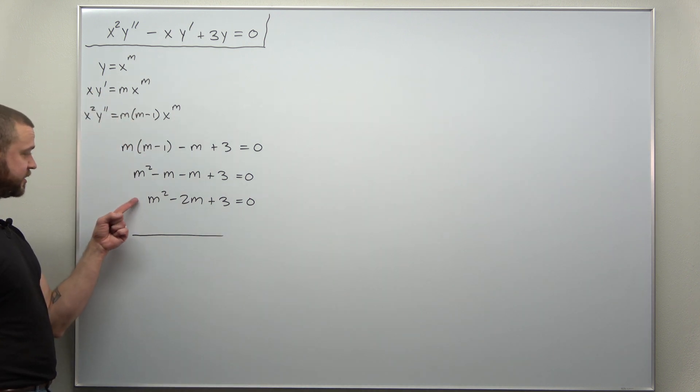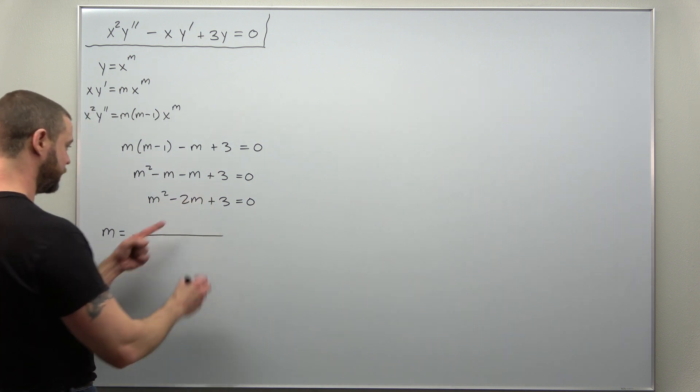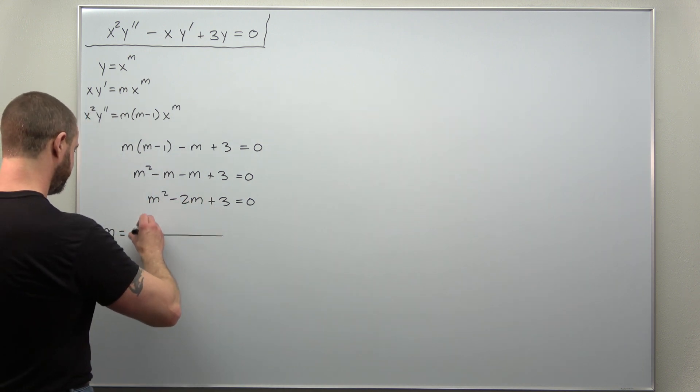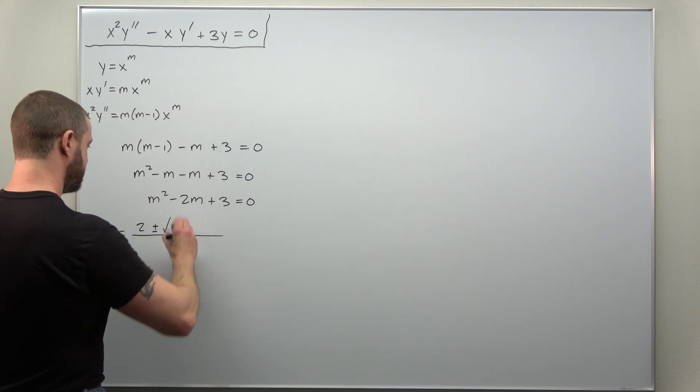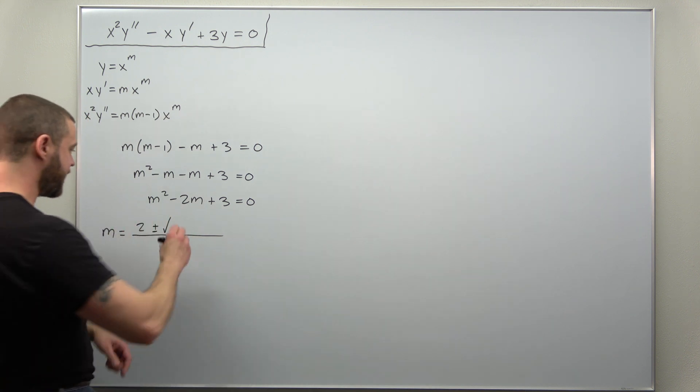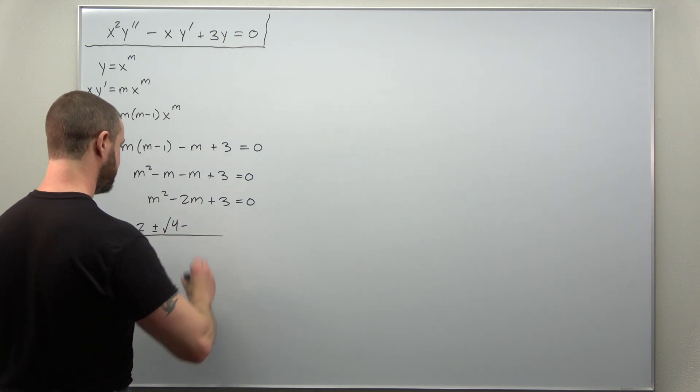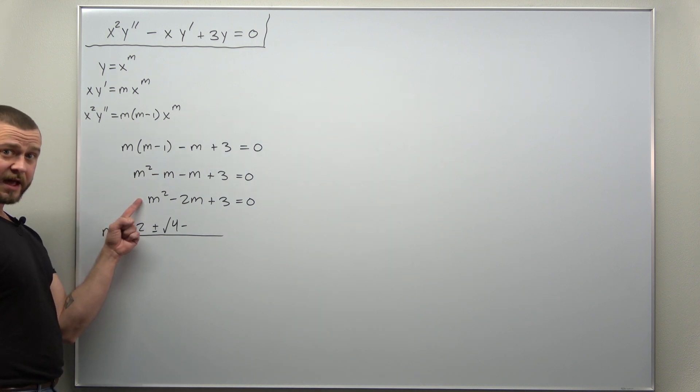Alright, and we have our coefficients. A is 1, b is negative 2, and c is 3. So we'll get negative b, which is 2, plus or minus b squared, 4, and then minus 4ac.